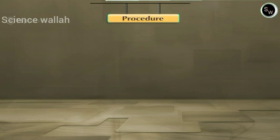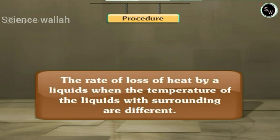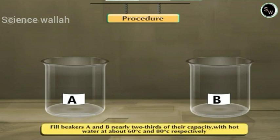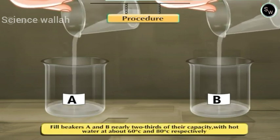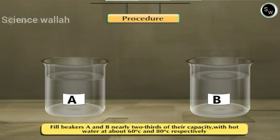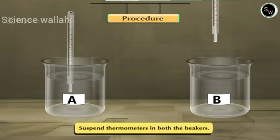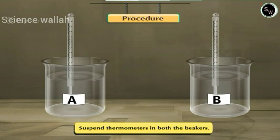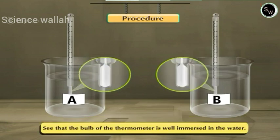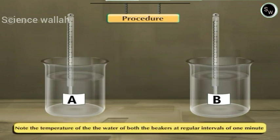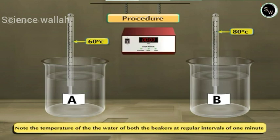Let us do an activity to find the rate of loss of heat by liquids when the temperature of the liquids with surrounding are different. Fill beakers A and B to nearly two-thirds of their capacity with hot water at about 60 degrees Celsius and 80 degrees Celsius respectively. Suspend thermometers in both the beakers. See that the bulb of the thermometer is well immersed in the water. Note the temperature of the water of both the beakers at regular intervals of one minute.